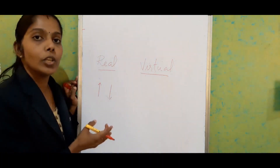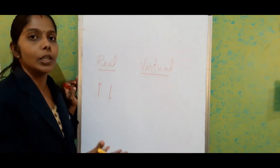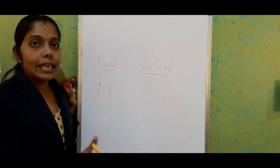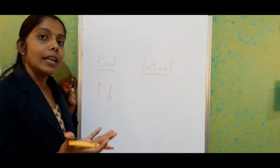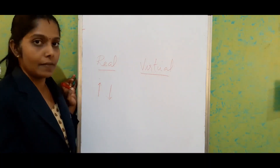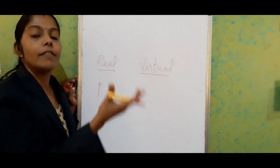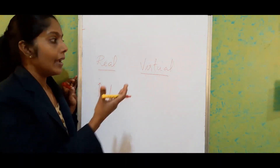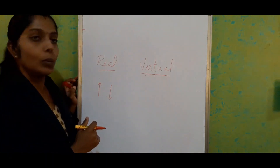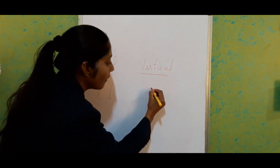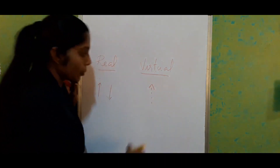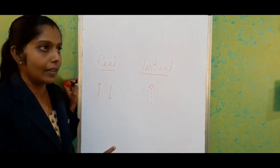If we consider the case of virtual image — we are very familiar with the word virtual. It means it's not real. So in this case, the rays never actually intersect at a point; we only feel like they appear to come from a point. If we keep a screen in front of the reflected ray, we never get the image on the screen. The most important point is we will always get an erect image, and we always represent the virtual image with a dotted line.